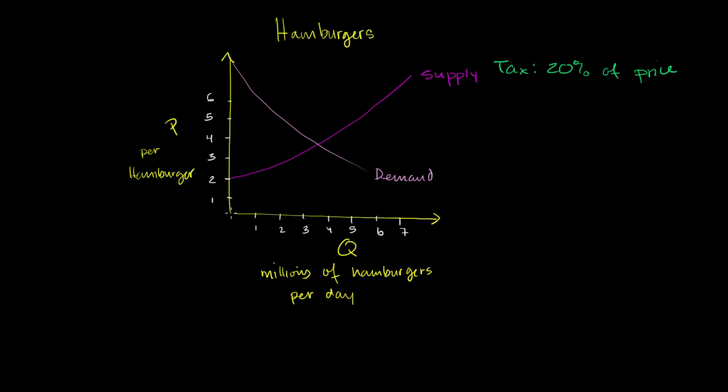Just like we saw in the last video, in order for producers to even think about producing that first hamburger, they need to get $2 per hamburger for it because that's their opportunity cost. Using those same inputs, that same labor and resources, they could produce, their other opportunity would give them at least $2. So you have to give them at least $2 in order to focus on hamburgers.